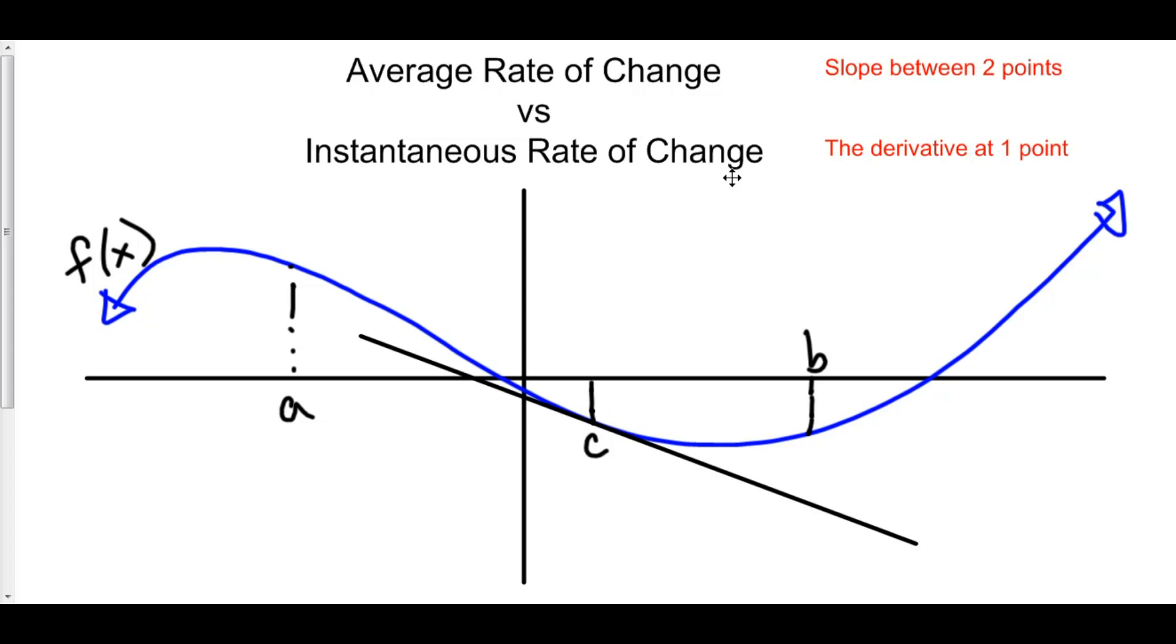It is instantaneous, as in the name. So average rate of change: slope between two points. Instantaneous rate of change: the derivative at one point. And that's all there is to it.